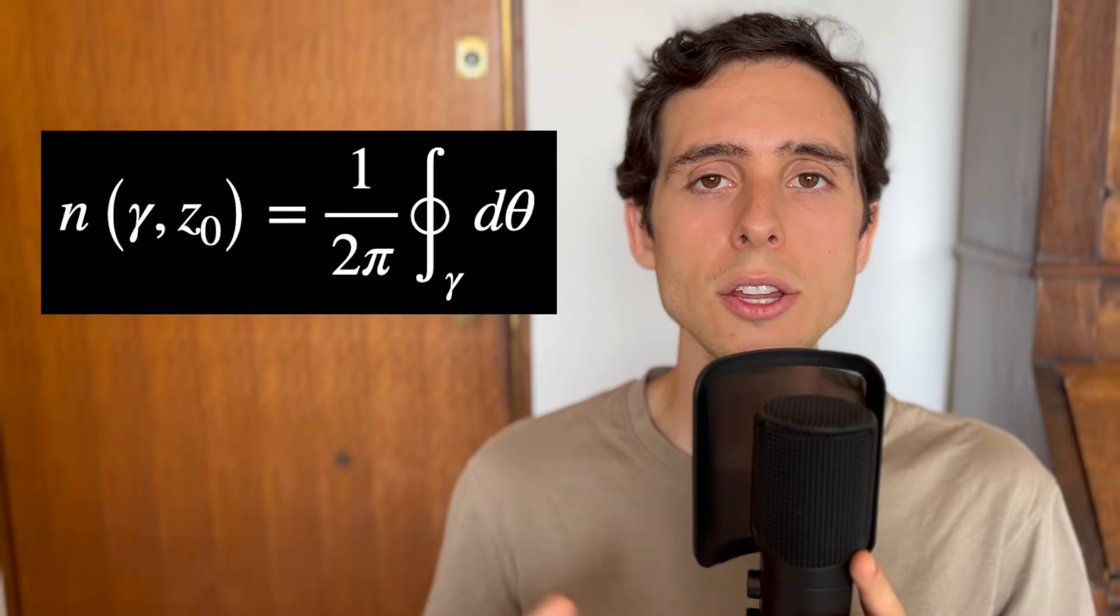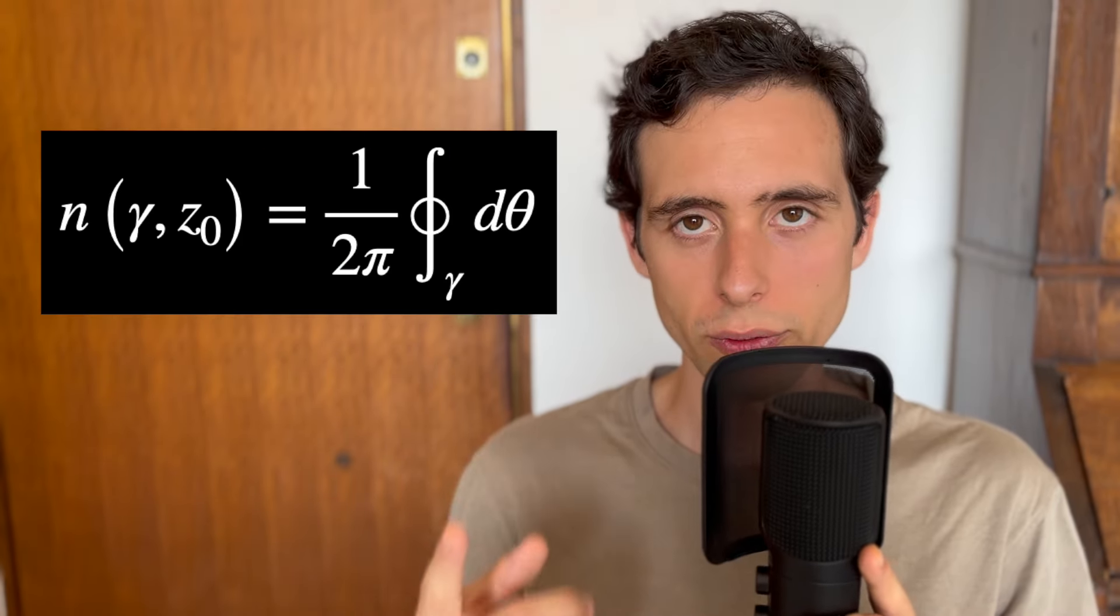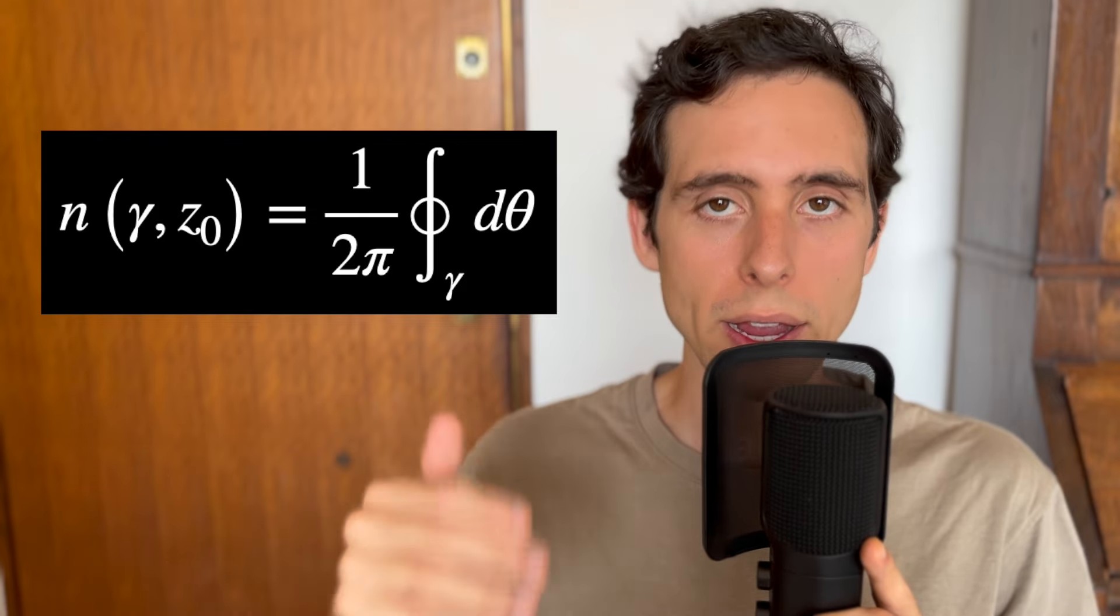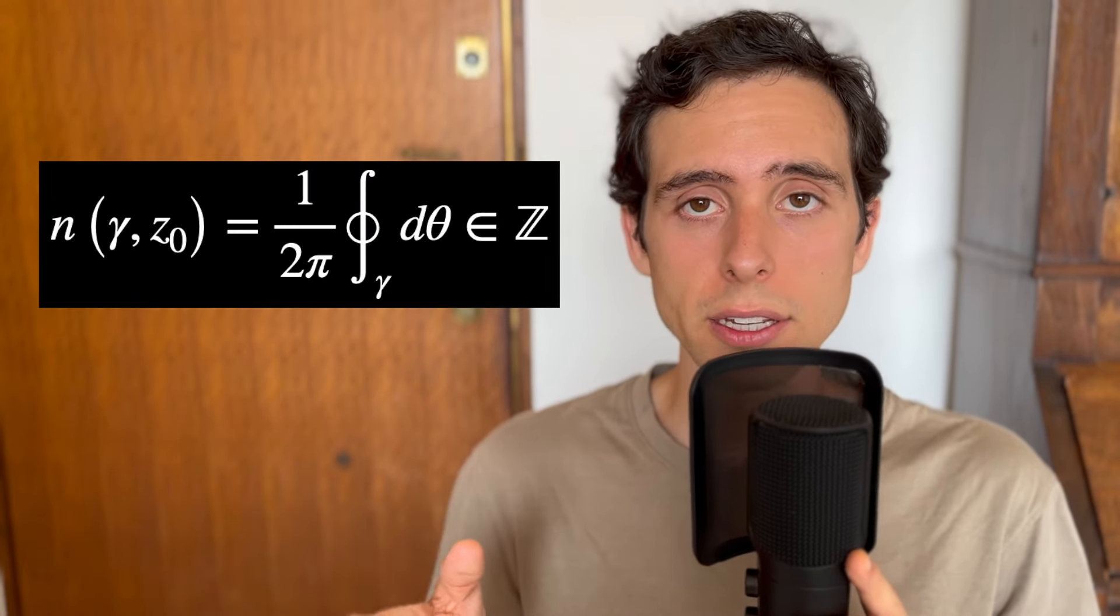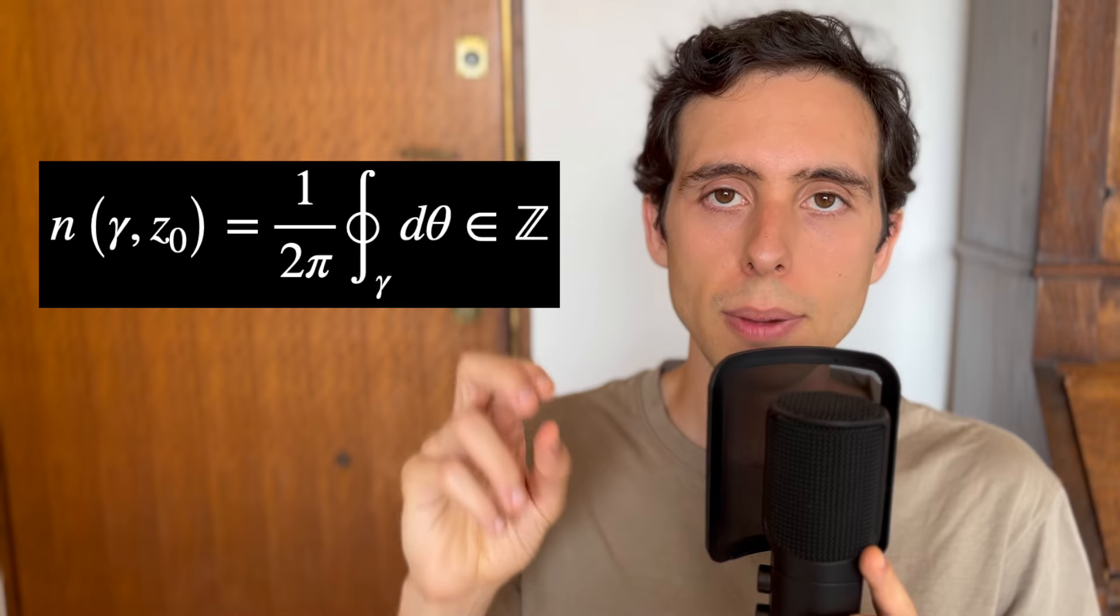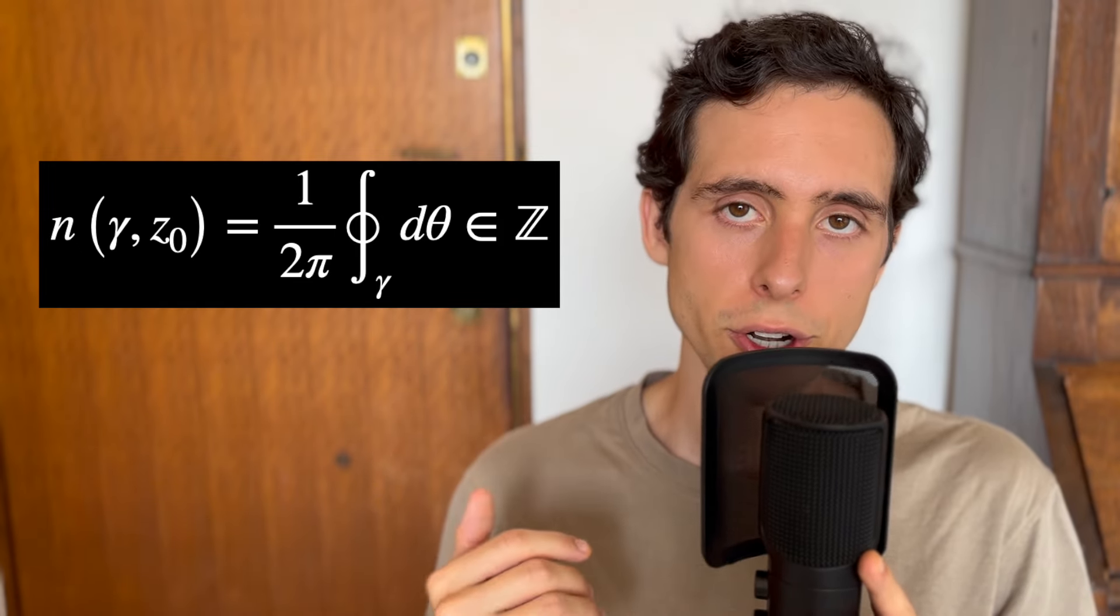The total change of θ as the curve completes one full traversal is 2π times the winding number. And that's why this integral, when normalized by 1 over 2π, always result in an integer number.